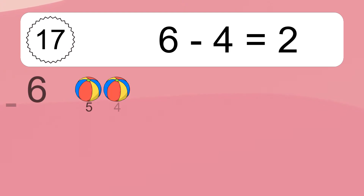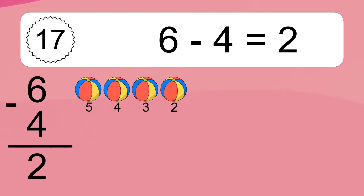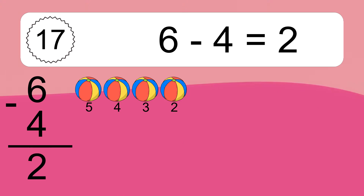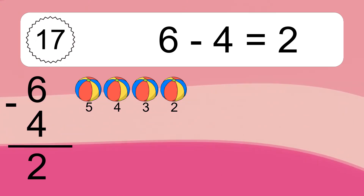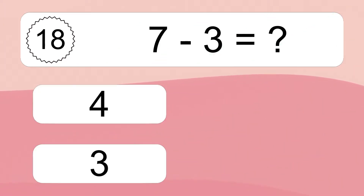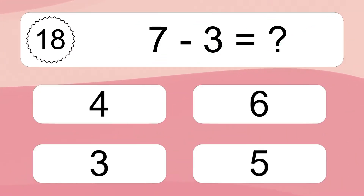6 minus 4 equals 2. Let's count it: 5, 4, 3, 2. 7 minus 3 equals what?